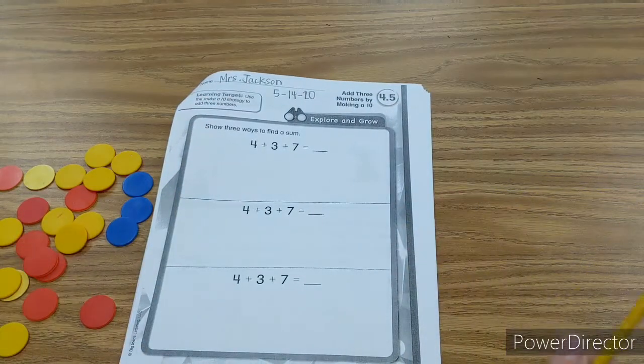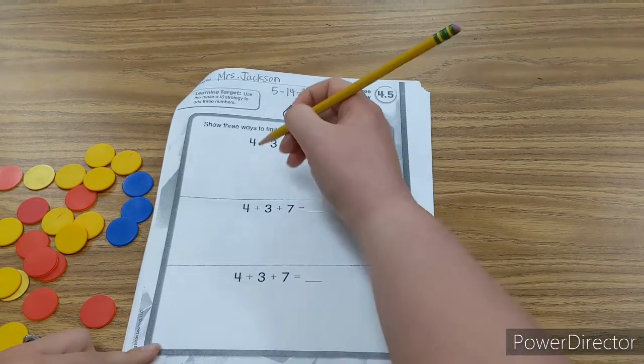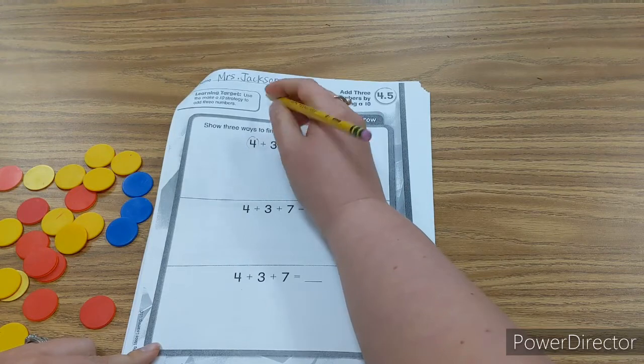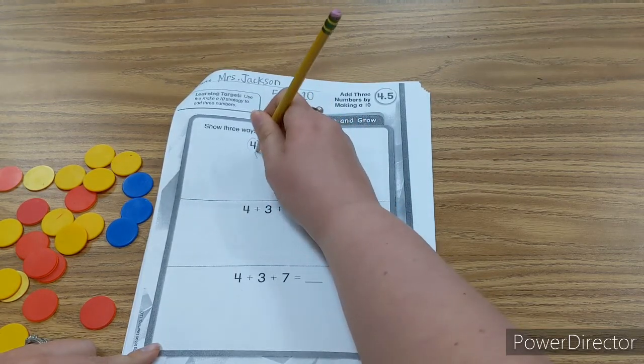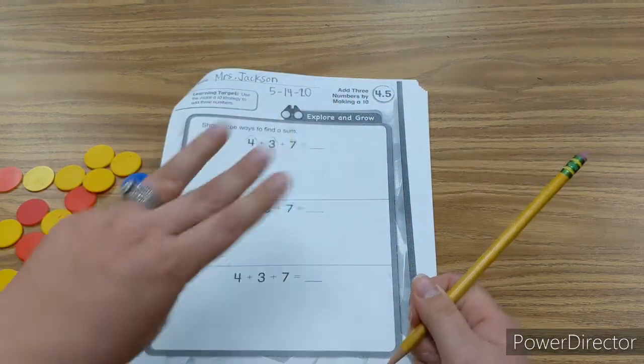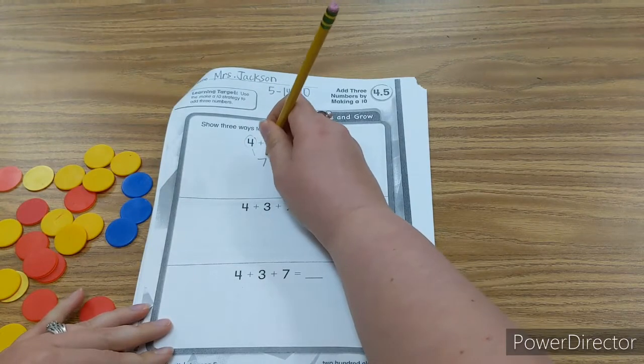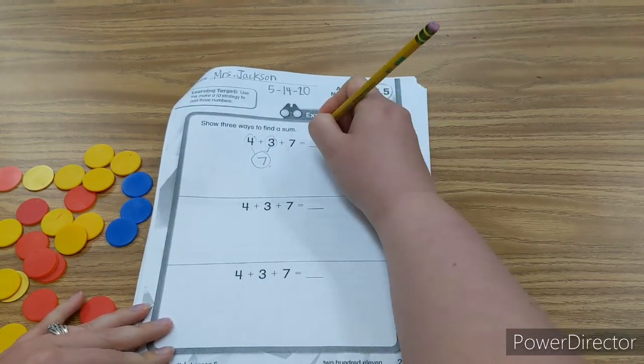Show three ways to find a sum. So we can do 4 plus 3 first. And 4 and 3 together is 4, 5, 6, 7. And then that makes it a double. So 7 plus 7 we know is 14.